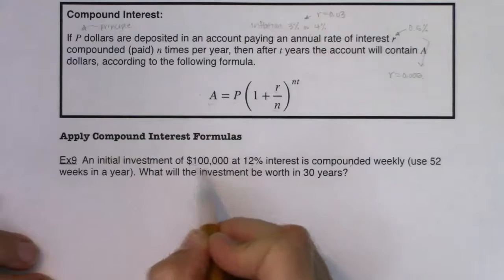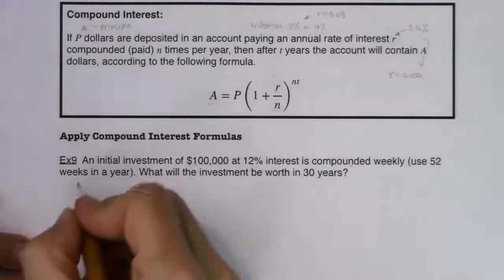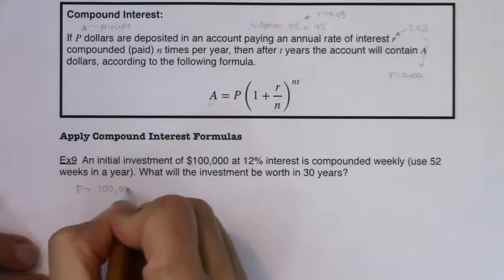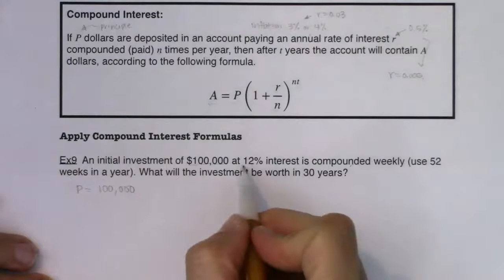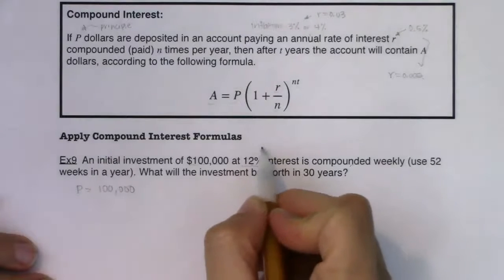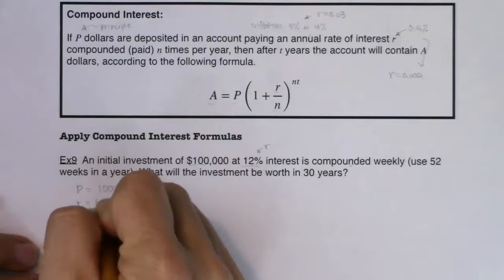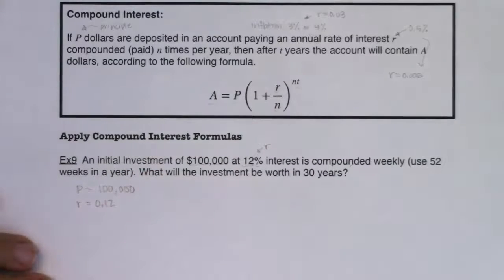All right. Our first number. This is our initial investment or it's our principal. So we would say here that P is a hundred thousand. Okay. You see my interest rate here. That's my R but you want to be careful when you enter R in for your formula you need to write it as a decimal.